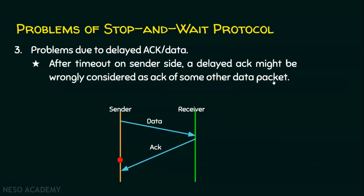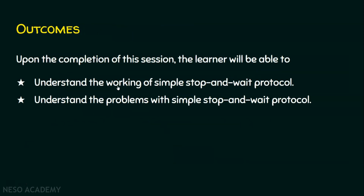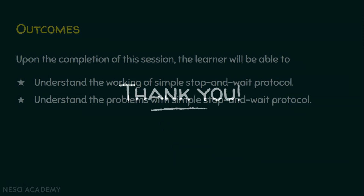Let's see all three problems together. Problem number one: due to lost data. Problem number two: due to lost acknowledgement. Problem number three: due to delayed acknowledgement or data. I hope now you are clear with the working of the simple stop and wait protocol and the problems associated with it. I hope you enjoyed the session. See you in the next lecture. Thank you.